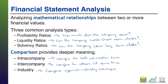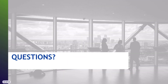So three common types of ratios, three types of comparisons, and combined this tells us even greater information about the company than what the numbers on the financial statements tell us alone. That's your overview of financial statement analysis.